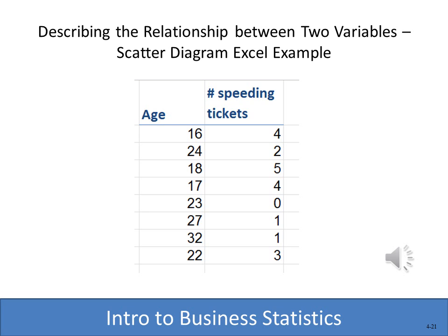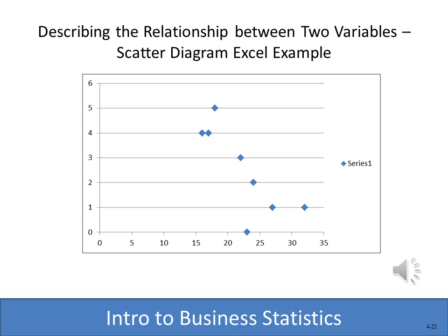Here are the survey results — the age of each respondent and the number of speeding tickets they reported. We'll use Excel to create a scatter diagram. Looking at the result, it appears there may indeed be a relationship: the younger the driver, the more speeding tickets reported. As the course continues, you'll learn ways to measure the strength and accuracy of such a relationship between age and speeding tickets.